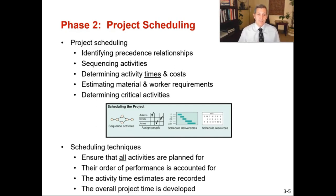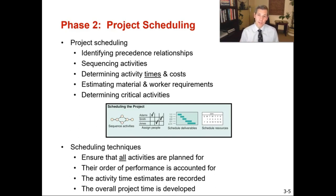Identifying precedence relationships means thinking about what is step one, then step two, then step three, and working through all the steps needed. Precedence means something that comes before another task can be completed. For example, constructing a home requires laying the foundation before putting up frames, and you can't put up the roof until the frames are up. In this course, the precedence relationships, sequence of activities, and activity times and costs will all be given to you.